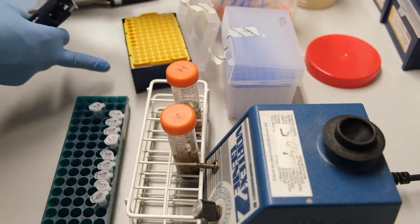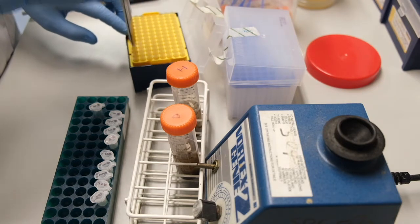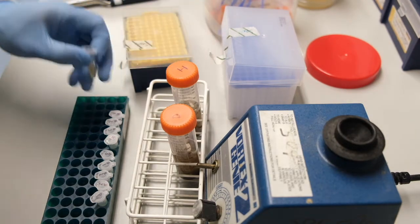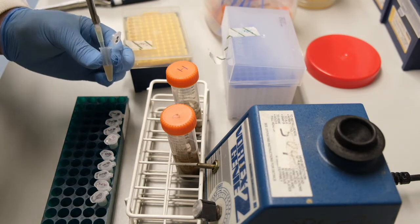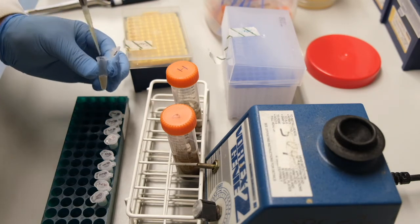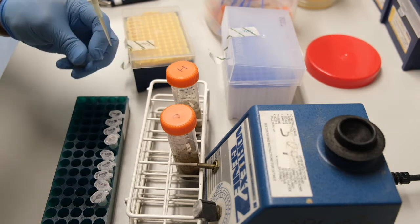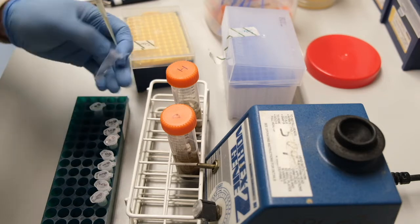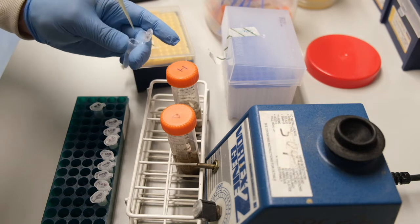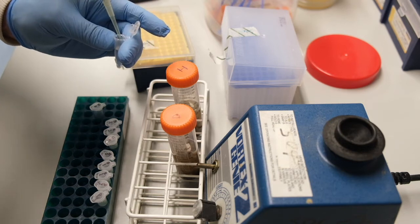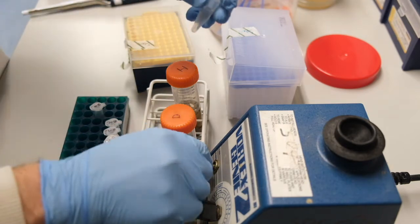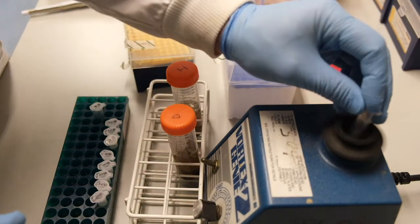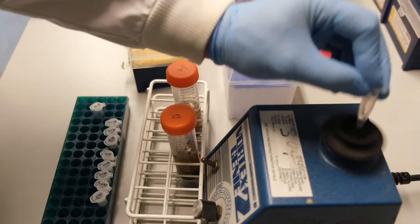Using a P200 set on 100 microliters, we take 100 microliters of the undiluted soil sample and transfer it to our 10 to the minus 1 dilution tube, where it will be mixed with 900 microliters of ringer solution. Vortex thoroughly to mix.